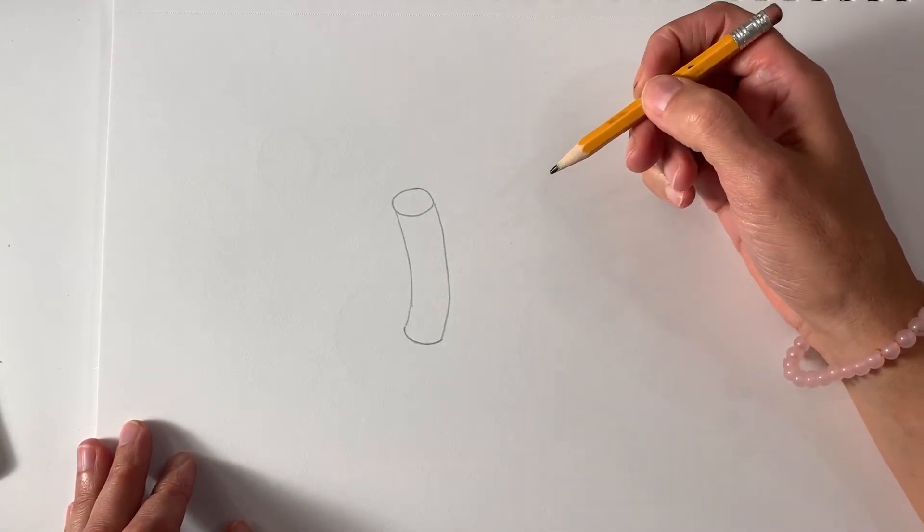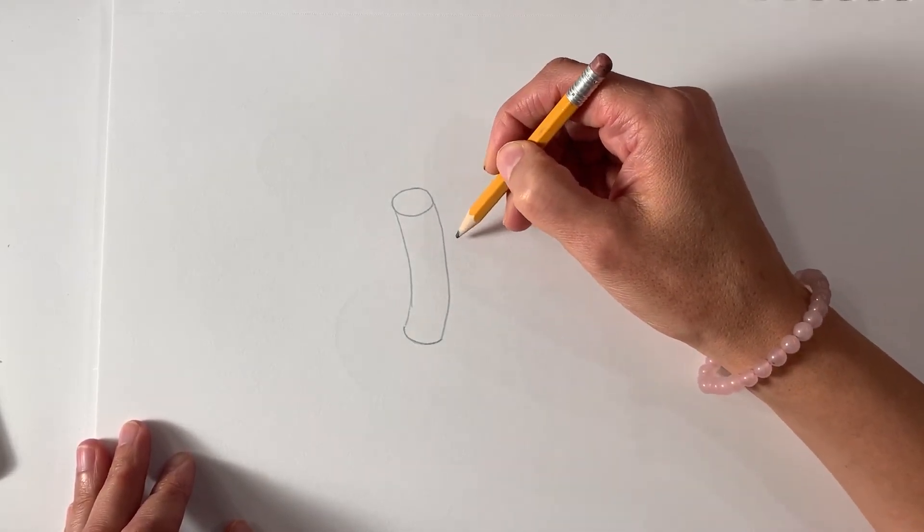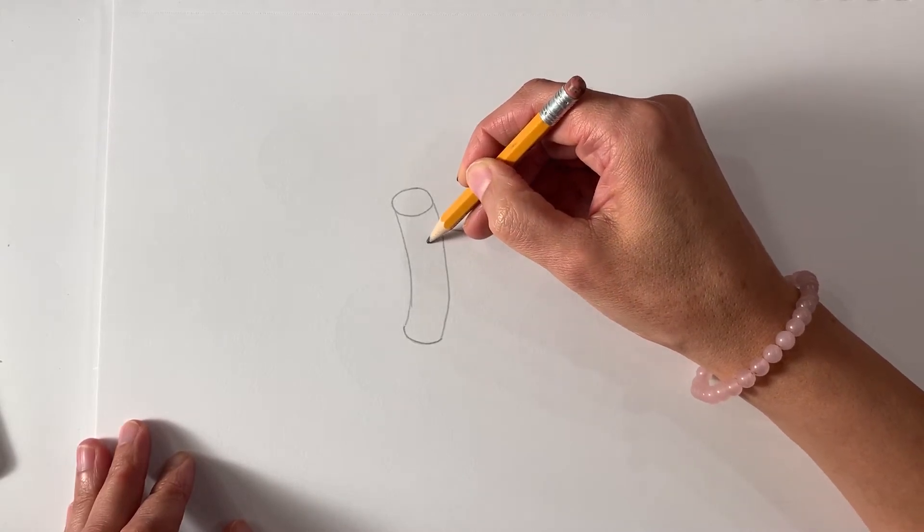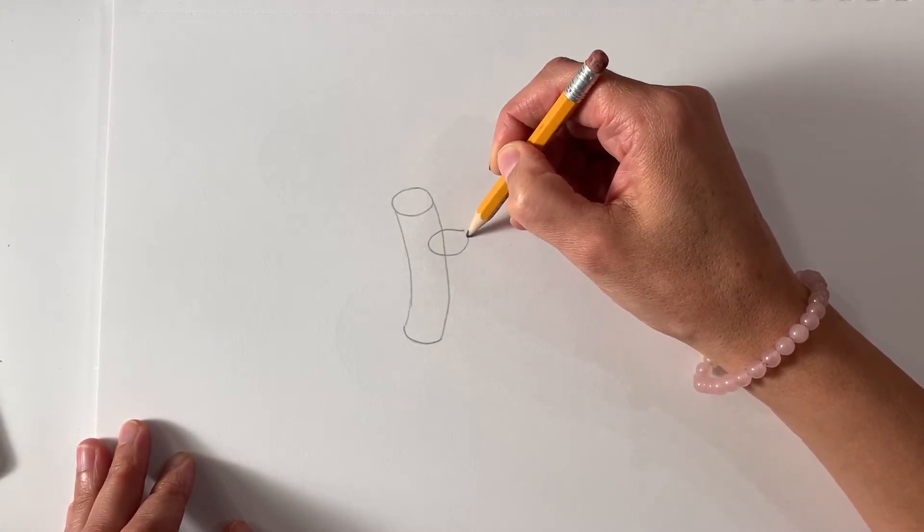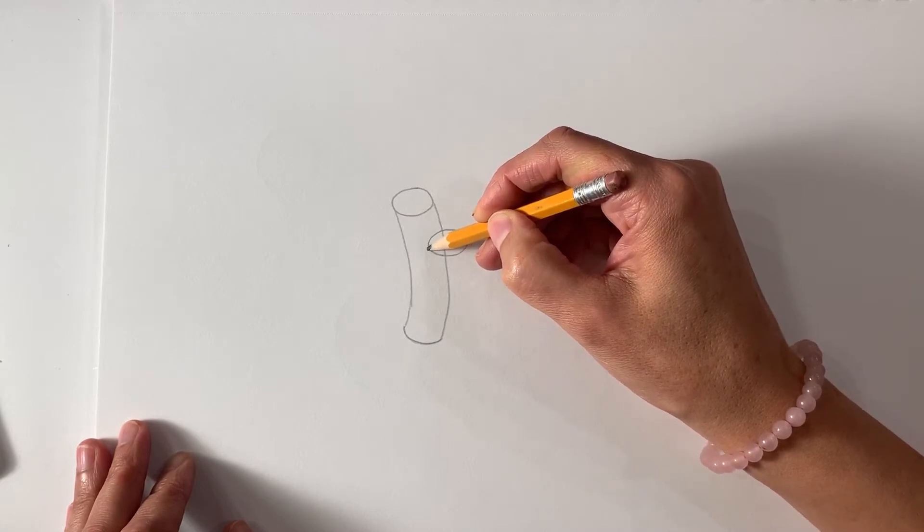The second way to make something appear three-dimensional is overlapping. So I'm going to overlap the first cylinder.